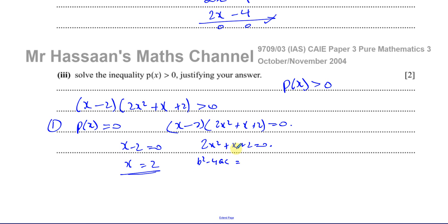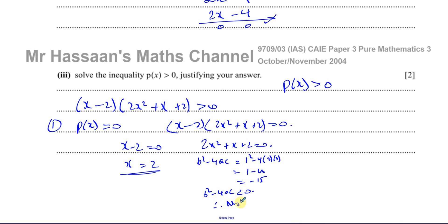The discriminant of 2x² + x + 2 is B² − 4AC = 1² − 4(2)(2) = 1 − 16 = −15. Since the discriminant is less than 0, there are no real solutions. Therefore x = 2 is the only root, meaning the graph crosses the x-axis only at x = 2.